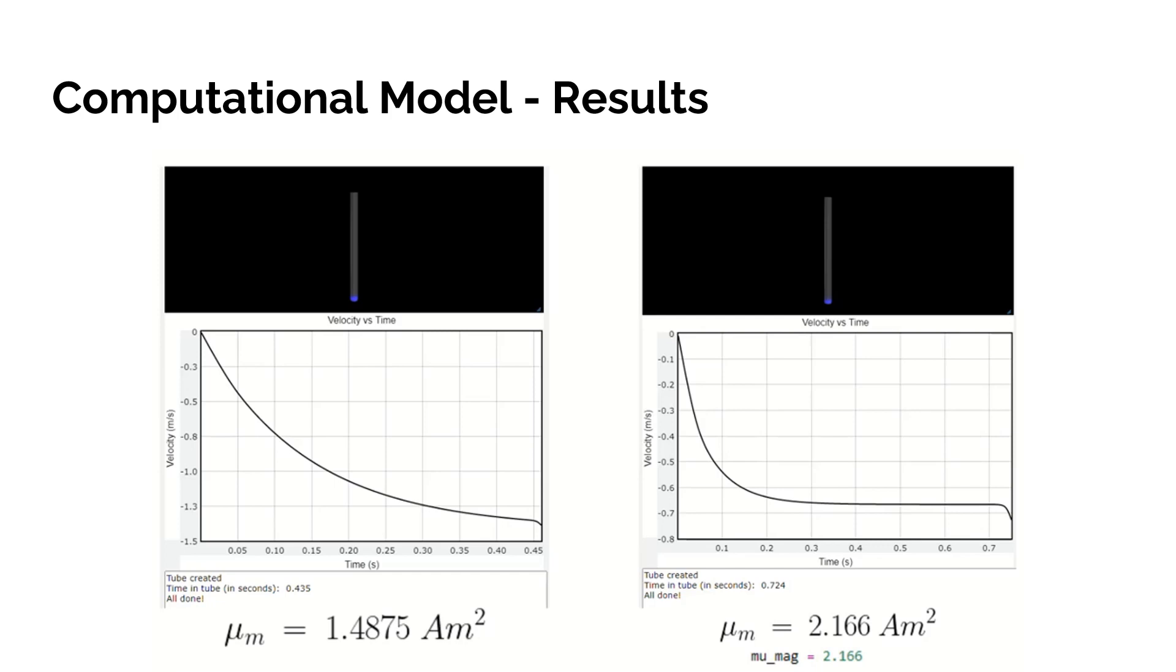Here are the results of the computational model. On the left, it is the results from when we used the magnetic dipole moment from Lab 3. And on the right is when we used the magnetic dipole moment to get a result that matches our observational results.